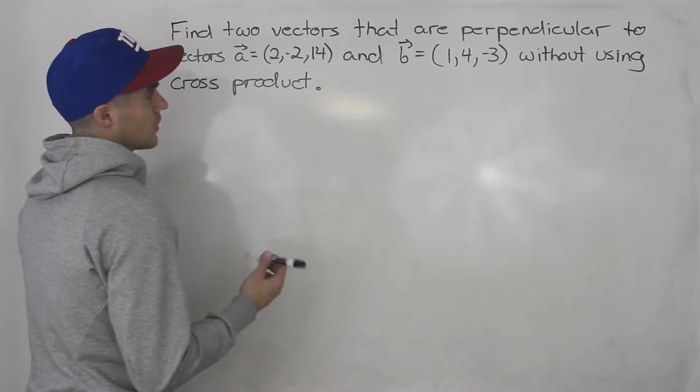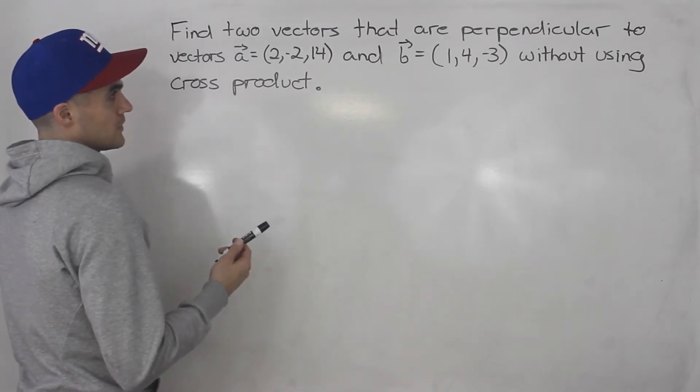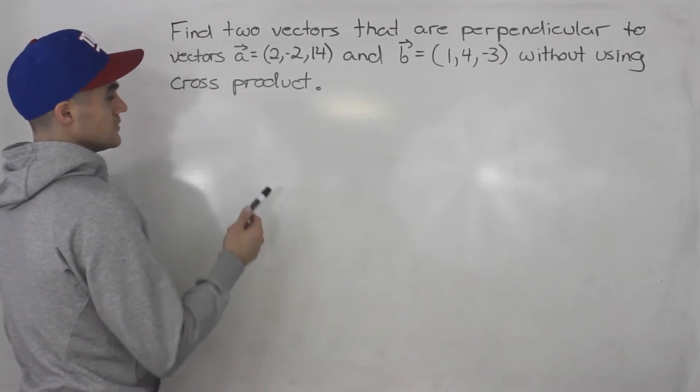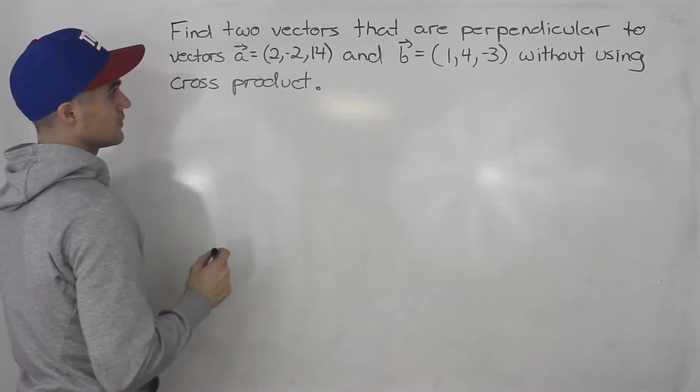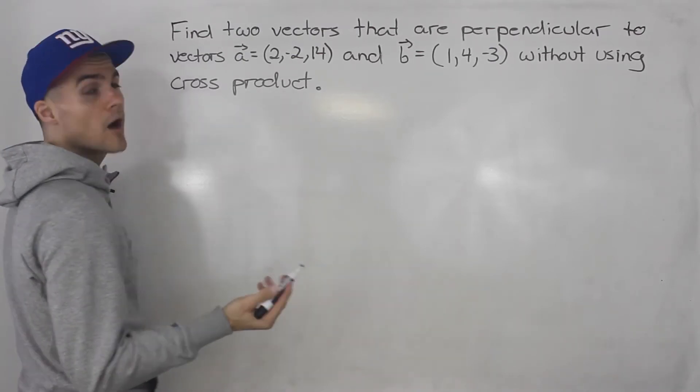So if we're not going to be using the cross product to find a perpendicular vector, which would be really easy to do, taking the cross product of these would give us a perpendicular vector, what can we do? Well, we can use the dot product.